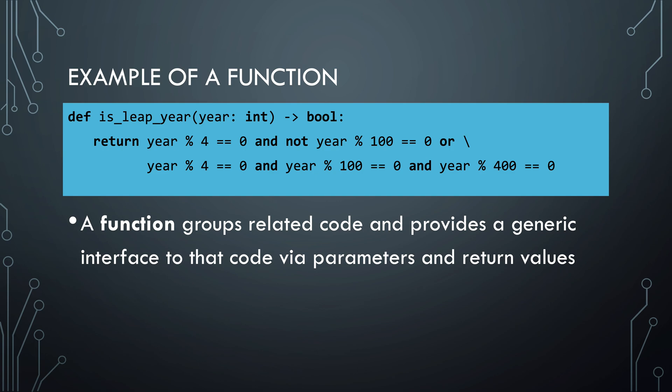In this case, the parameter is an integer number representing the year. The return value is a boolean, true or false. So, now, when you need to know if a year is a leap year, you simply call this function. That is the power of structuring code.